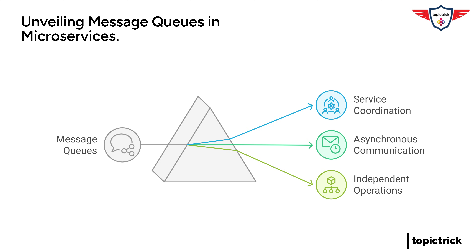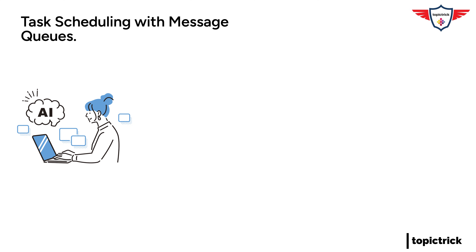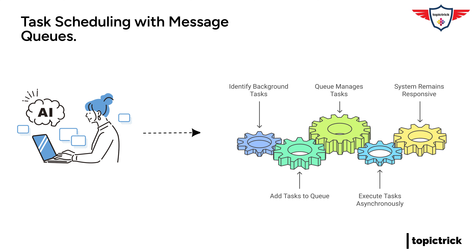Another great example is task scheduling. Let's say you have a system that needs to perform various background tasks like sending email notifications or processing large data sets. Message queues can efficiently manage and execute these tasks asynchronously, freeing up resources and ensuring the system remains responsive to user requests. It's like having a dedicated team in the restaurant handling reservations and special requests without slowing down the main kitchen operations.